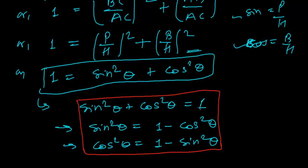In further trigonometry, as we keep learning, we will be using all these identities — it's really important, so keep them in mind properly and remember them at any time. In the next video, we'll be learning that 1 plus tan squared theta equals sec squared theta, which is our second trigonometric identity. Watch the next video — thank you, bye!